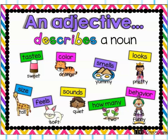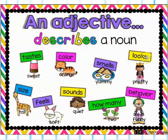What is an adjective? An adjective describes a noun. It can describe taste, like sweet or sour. Color, like orange, yellow, blue, green. Smells, like yummy or delicious. Looks, like pretty or beautiful. Size, like tall, small, or wide. Feels, like soft, rough, or fuzzy.